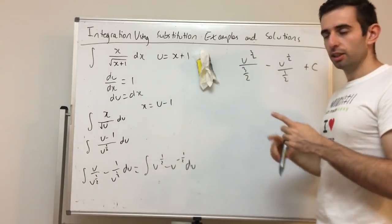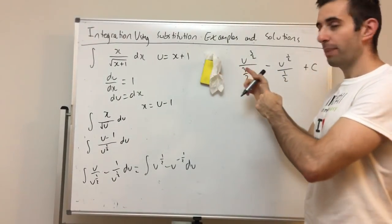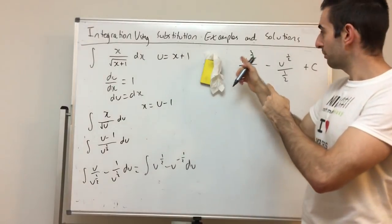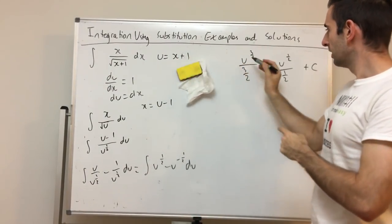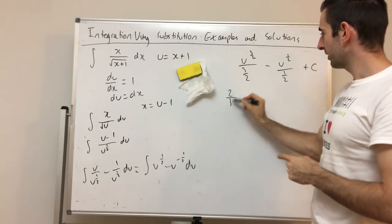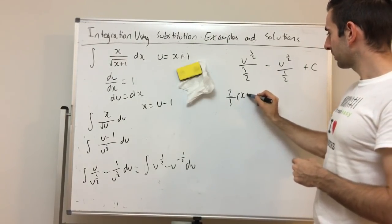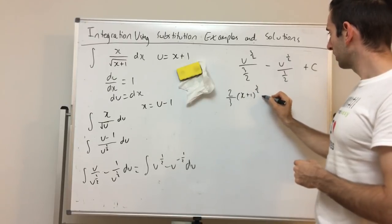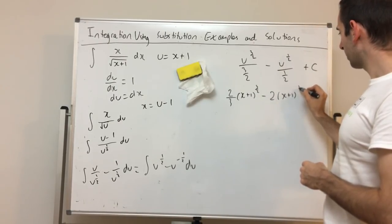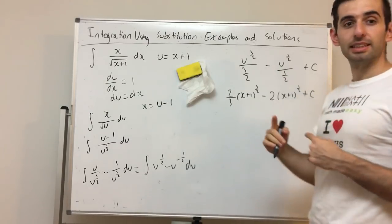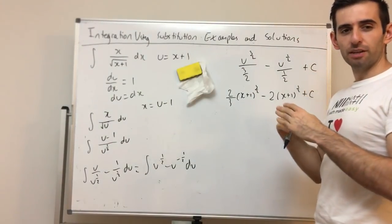We get (2/3)u^(3/2) minus 2u^(1/2) plus c. Since we have no bounds, we sub u = x + 1 back in. Cleaning that up: (2/3)(x + 1)^(3/2) minus 2(x + 1)^(1/2) plus c. Those two examples cover most integration by substitution questions.